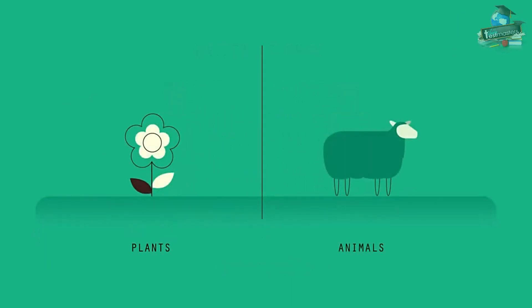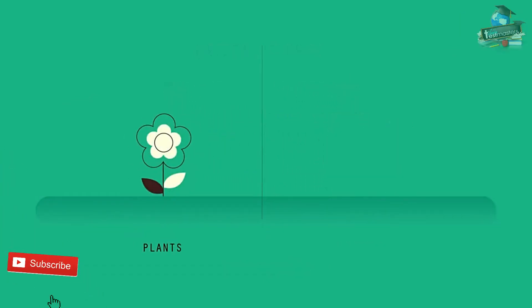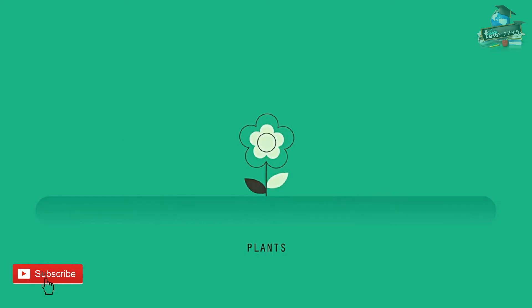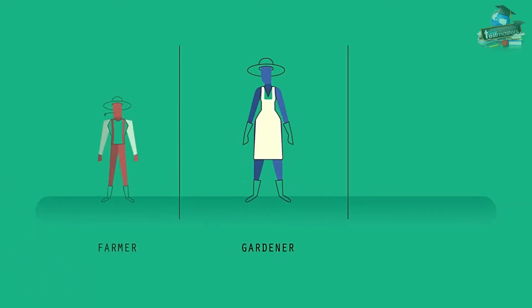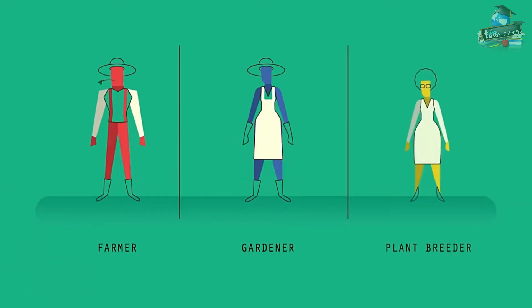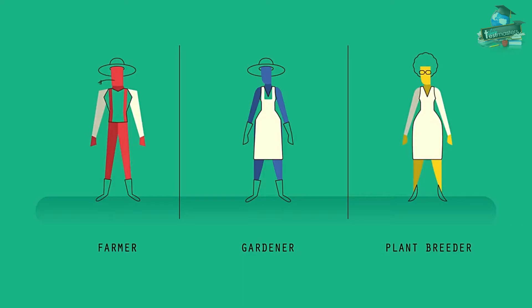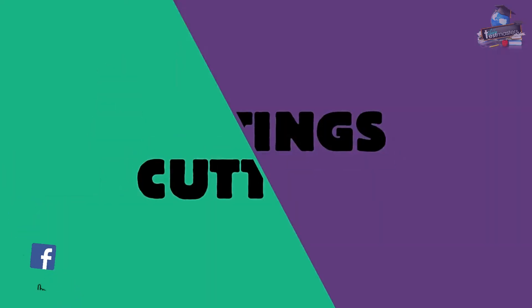Both plants and animals can be cloned. Let's start with plants. A gardener, farmer or plant breeder might want to make many copies of a particular plant quickly. The easiest and cheapest way to do this is to take cuttings.